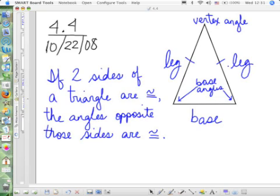All right, the first theorem that's presented in section 4.4 says: if two sides of a triangle are congruent, which would give us an isosceles triangle, then the angles opposite those sides are congruent. So if you look at our picture, if the leg equals the leg...